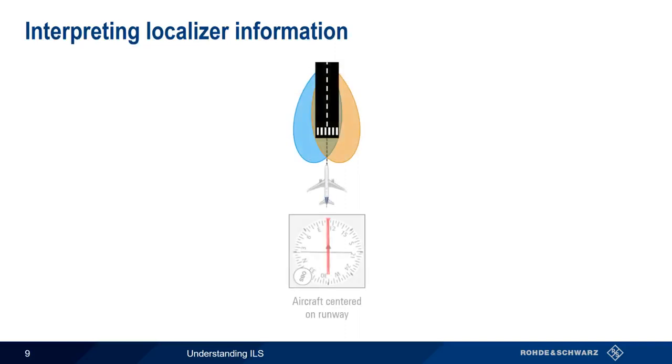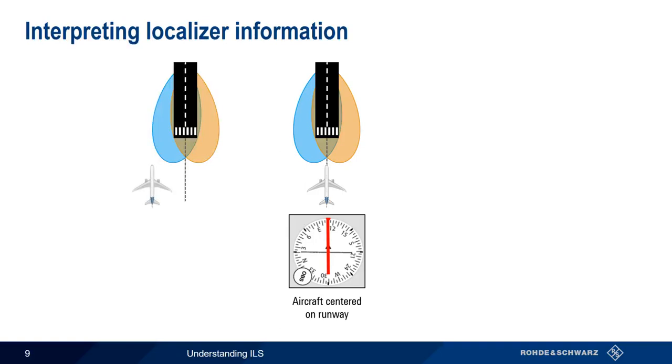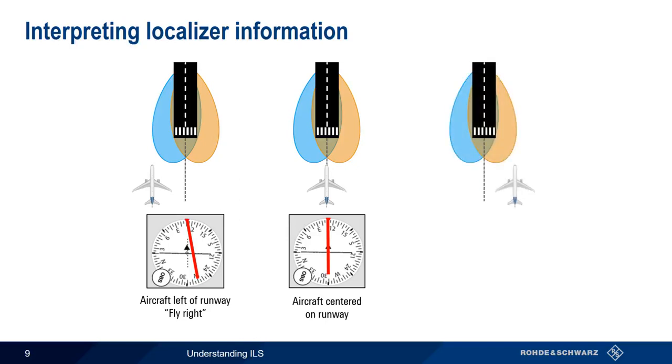In the cockpit, localizer information is often displayed in the form of a needle. If our aircraft is on the centerline of the runway, the localizer needle will be centered. If we are to the left of the centerline, our needle will look like this, indicating that we need to fly right. And if we are too far to the right, our indicator moves to the left, giving us a fly left indication.